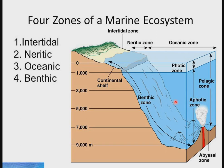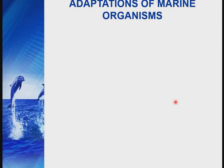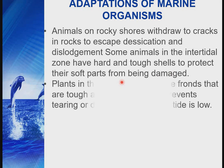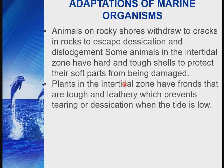Adaptations of marine organisms: animals on rocky shores withdraw into rocks to escape desiccation and dislodgement. Some animals in the intertidal zone have hard, tough shells to protect them — examples include crabs and shore fishes. Animals like periwinkle and snails have shells to protect their soft body parts. Plants in the intertidal zone have fronds that are tough and leathery, preventing tearing or desiccation when the tide is low.